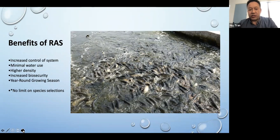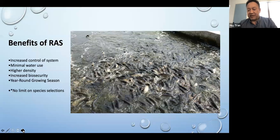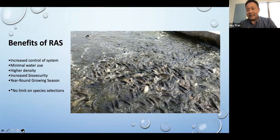RAS, or recirculating aquaculture technology — the reason why we do it: it increases control, minimizes water usage, we can go with a much higher density, biosecurity is a very important aspect, and we can have year-round growing with no limit on species. We just have to understand their biology first. The asterisk is because just because we can do a species doesn't necessarily make it a good candidate due to cost or market. We probably wouldn't want to grow salmon in Florida — though there is a farm doing that. Does it make economic and financial sense, first of all?